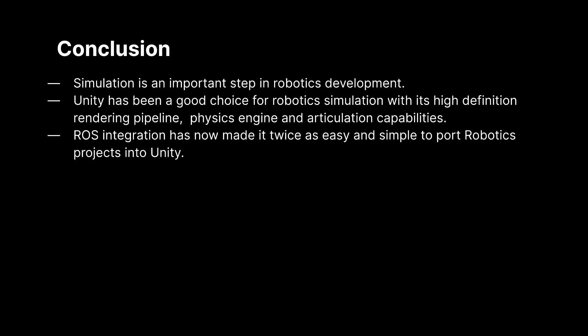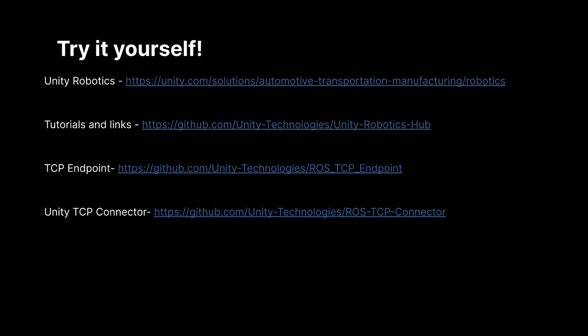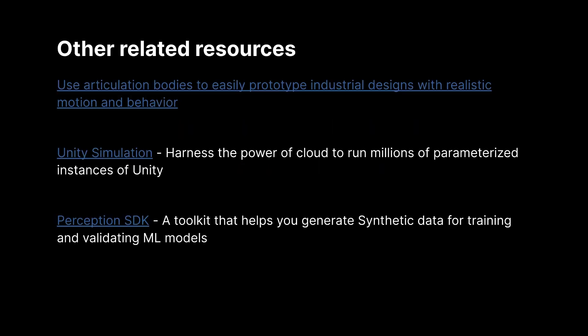In conclusion, simulation is a very important step for robotics development, and Unity has become an even more powerful tool for robotics simulation. Feel free to try it yourself — we have four links here. The topmost one is our robotics splash page. Below that we have the Unity Robotics Hub GitHub repo, which contains tutorials and links to our other related repos, including a pick-and-place tutorial like the one we showed earlier. Below that we have the TCP endpoint repo, which is the server code executed in ROS that allows message passing between Unity and ROS. And finally we have the TCP connector repo, which allows for easy communication with the TCP endpoint from Unity. This repo also includes the message generation plugin for generating C# classes from ROS messages. We also have some related resources: a blog post describing the physics improvement that makes robotic simulation more accurate, Unity Simulation — a service for running simulations in the cloud at scale — and the Perception SDK, which helps generate synthetic data for training ML models like the cube position and rotation estimator demonstrated earlier.